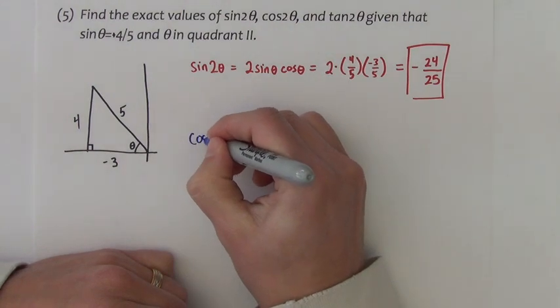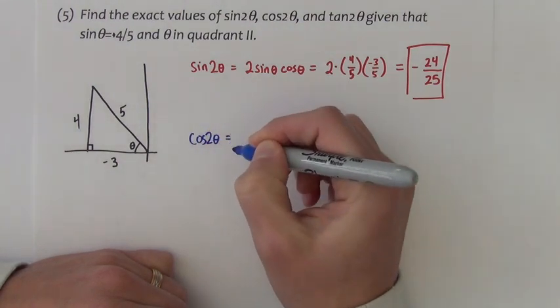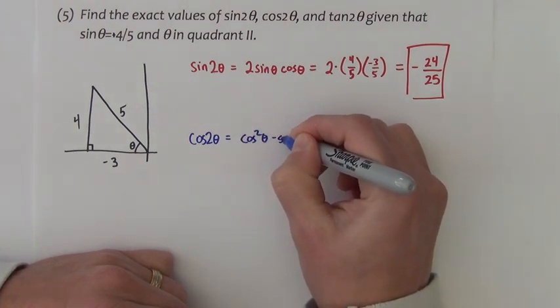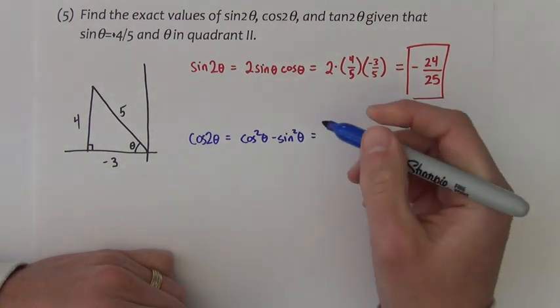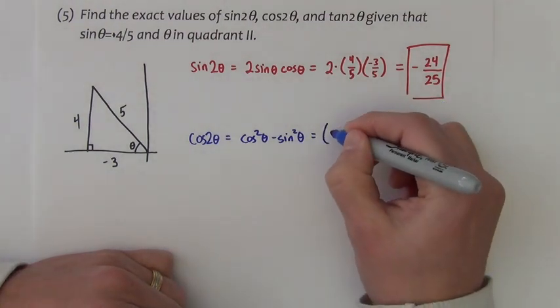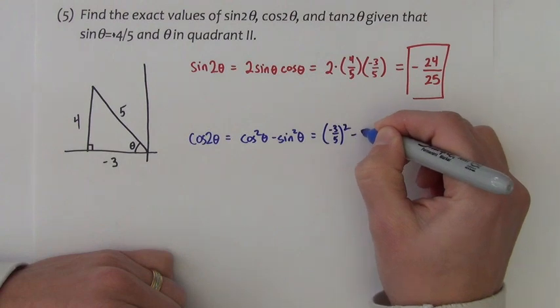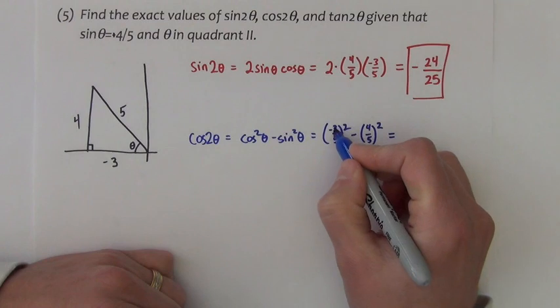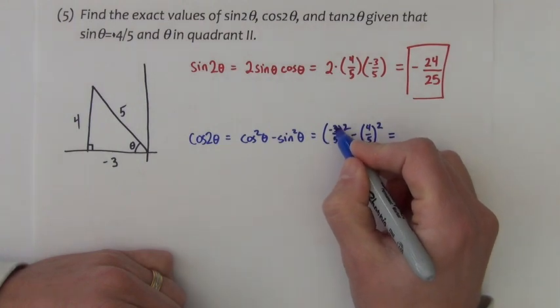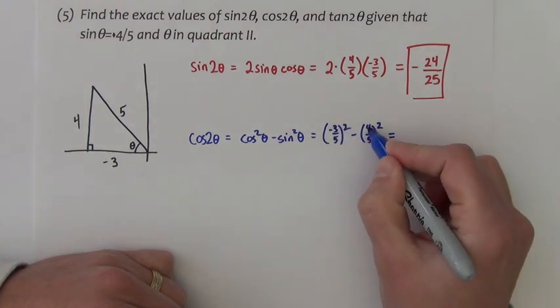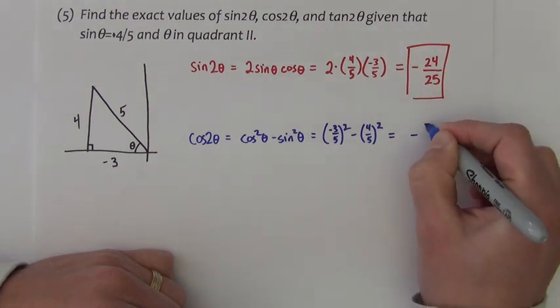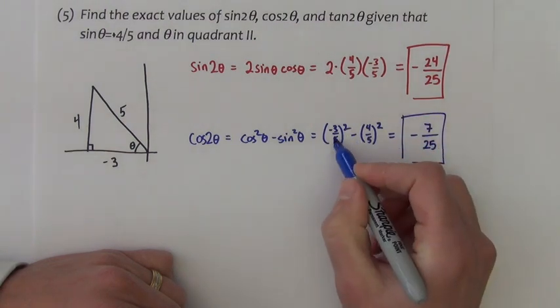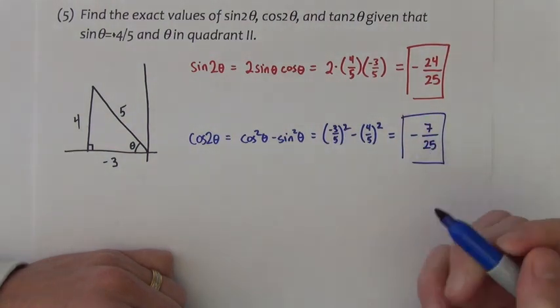The cosine of 2θ, we again need the formula for cosine of a double angle, and it is cosine squared minus sine squared. We want the cosine, which is negative 3 fifths squared, minus the sine, which is 4 fifths squared. This scores positive 9, this scores 16. 9 minus 16 is negative 7, and it will also be over 25ths because it's 5 squared and 5 squared, common denominator of 25.